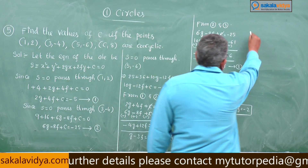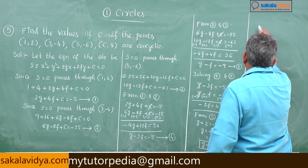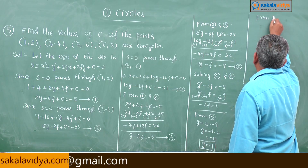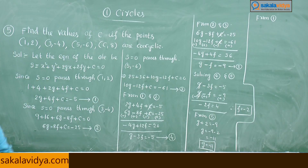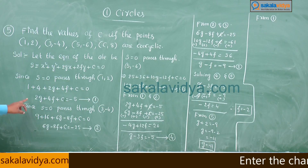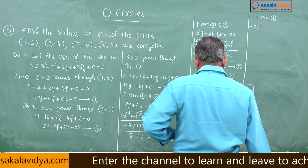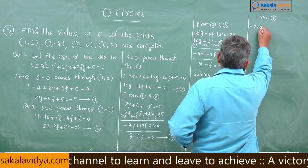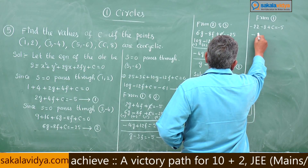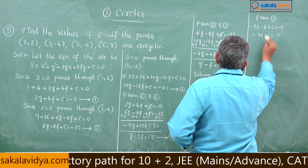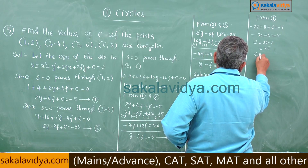From Equation 1, substituting g = −11 and f = −2: 2(−11) + 4(−2) + c = −5, so −22 − 8 + c = −5, giving c = −5 + 30 = 25.